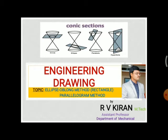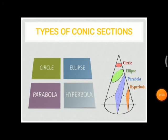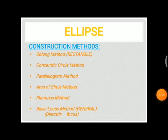In the previous lecture we already discussed the types of conic sections, where three types of curves were elaborated — the first one being the ellipse. Today we are going to define different methods for the construction of the ellipse.